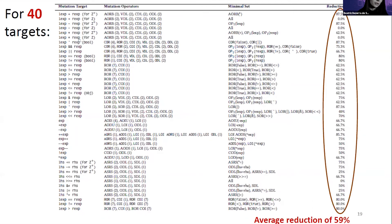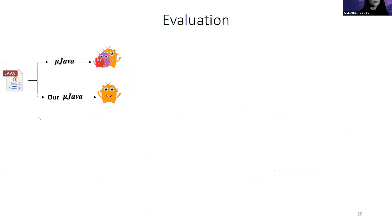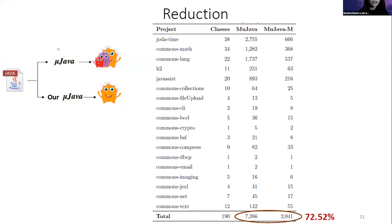However, mutation testing is usually used with entire programs, so we evaluate our technique with entire programs. MiJava is a mutation testing tool which creates mutants for programs written in Java. We modified MiJava to only apply the useful mutations based on our findings. We applied MiJava and our tool to 17 real projects, and MiJava generated more than 7,000 mutants, while our technique only generated almost 2,000 mutants. So it's a reduction greater than 72%.